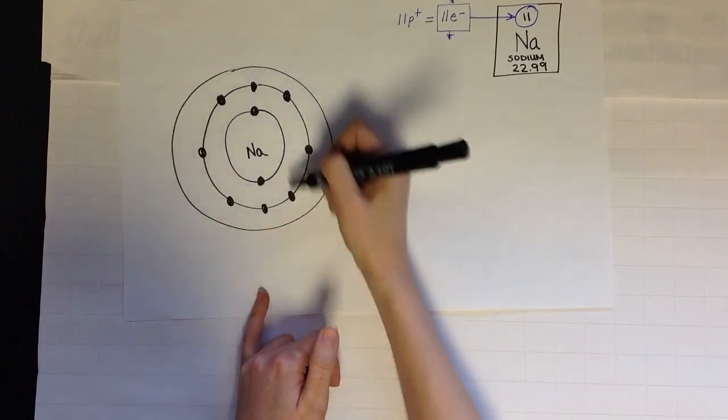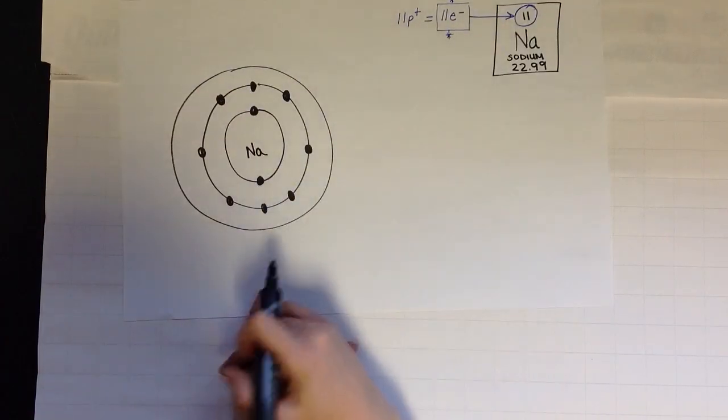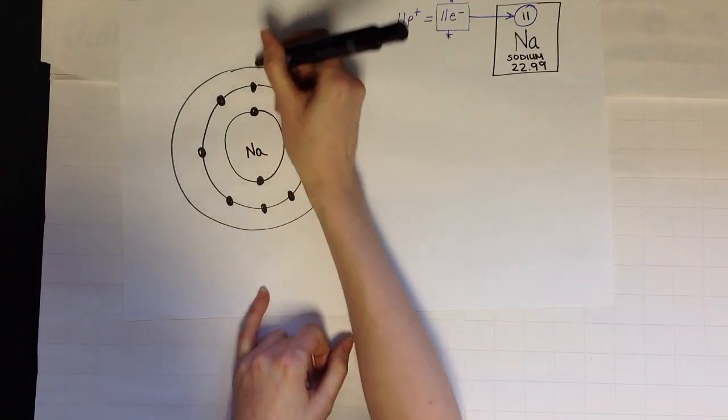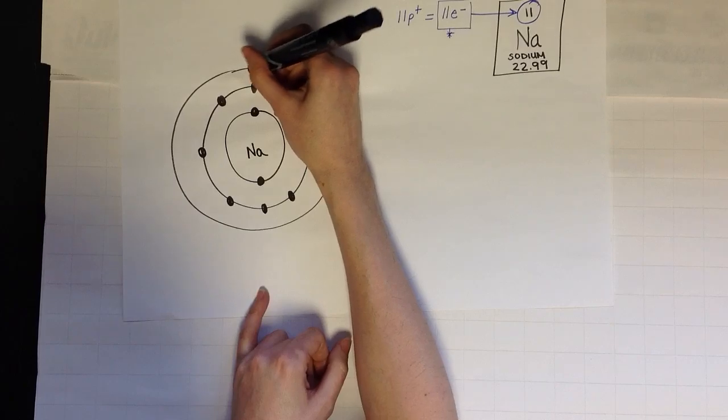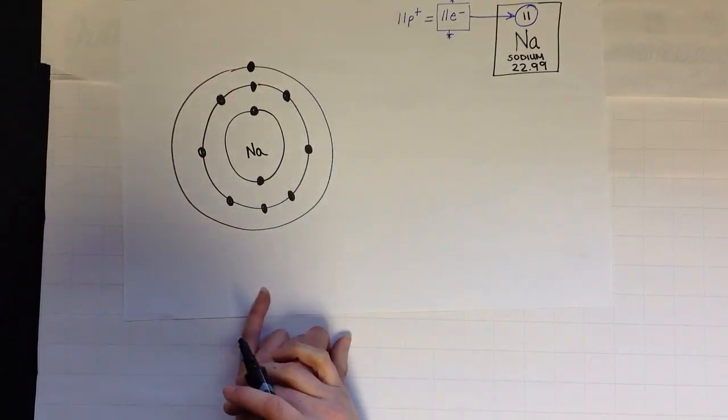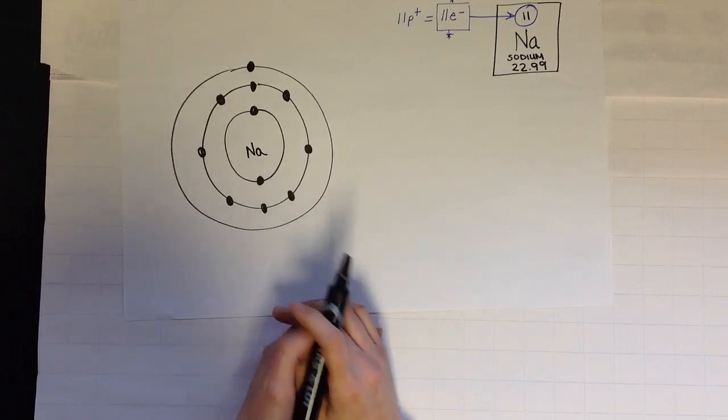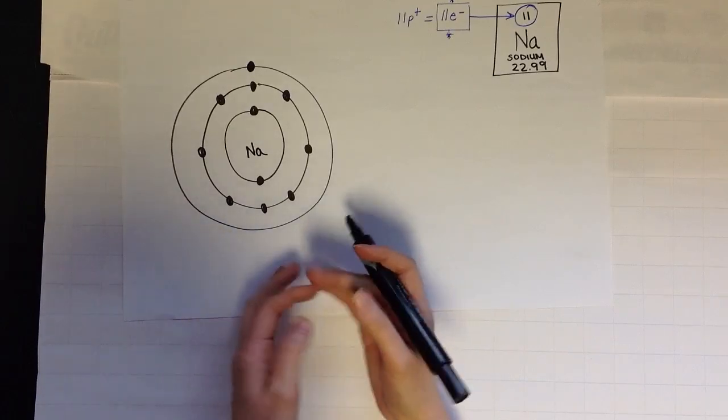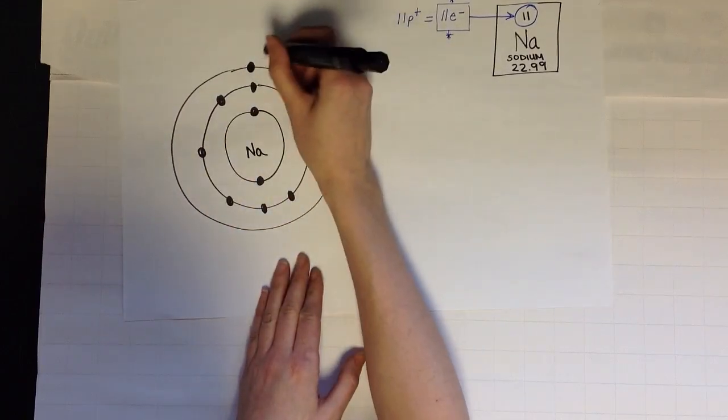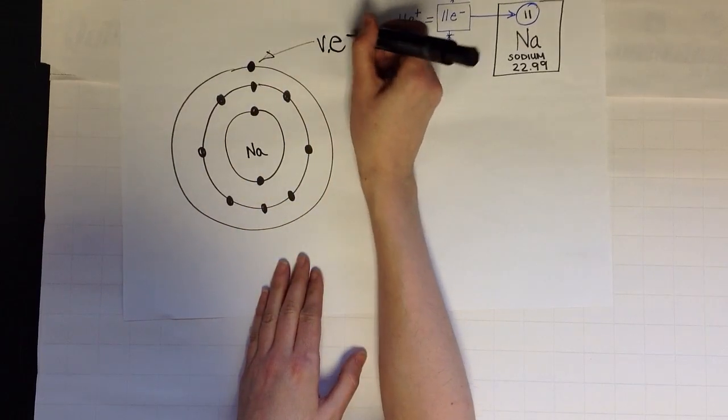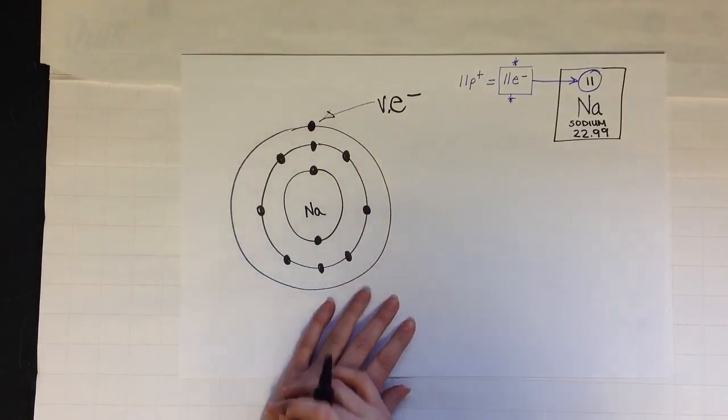That makes 10, right? Eight and two makes 10. I have one more electron. These are my total electrons. So I need to use an extra energy level to get that to now 11 electrons. So if you count up all the black dots, a total of 11 electrons.